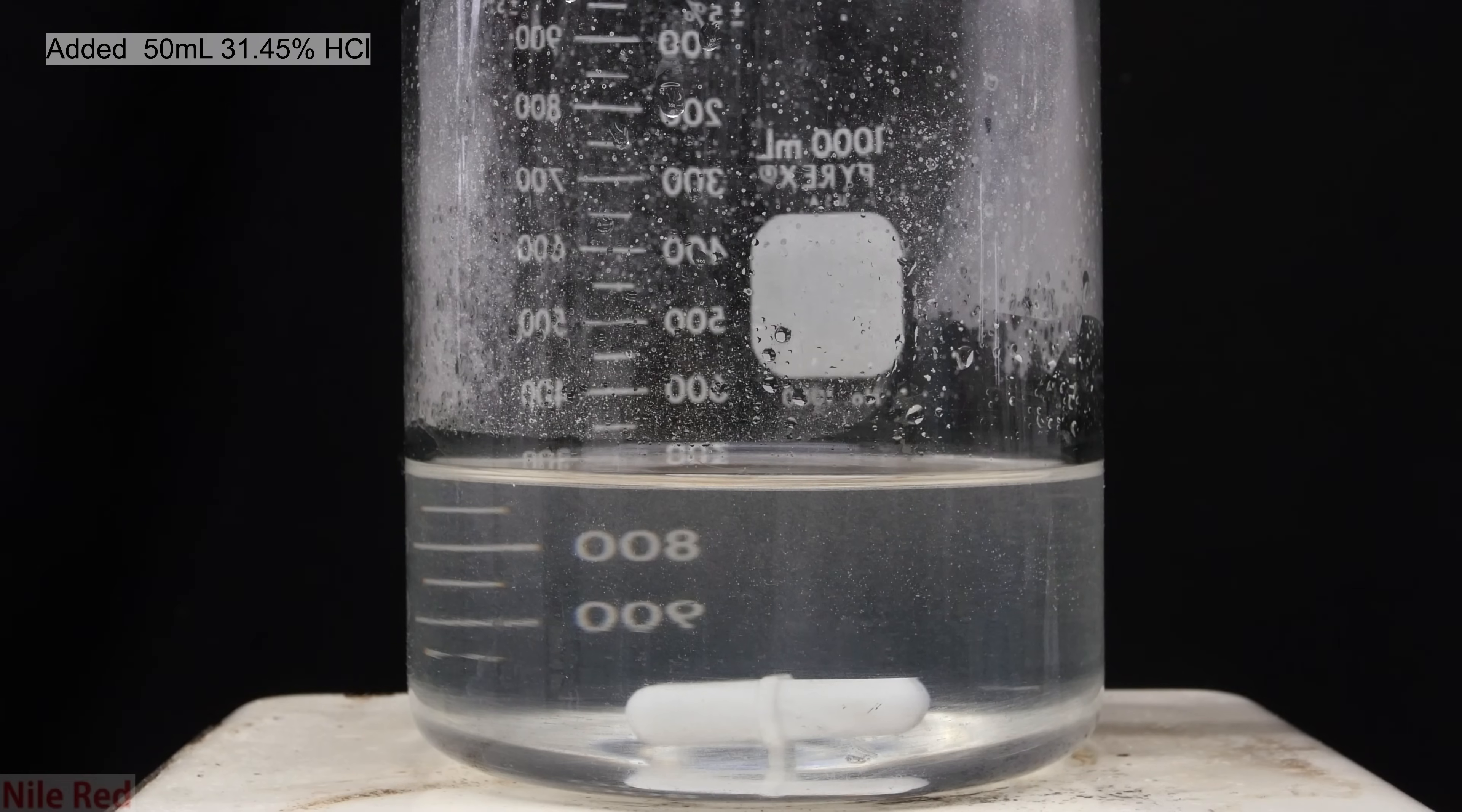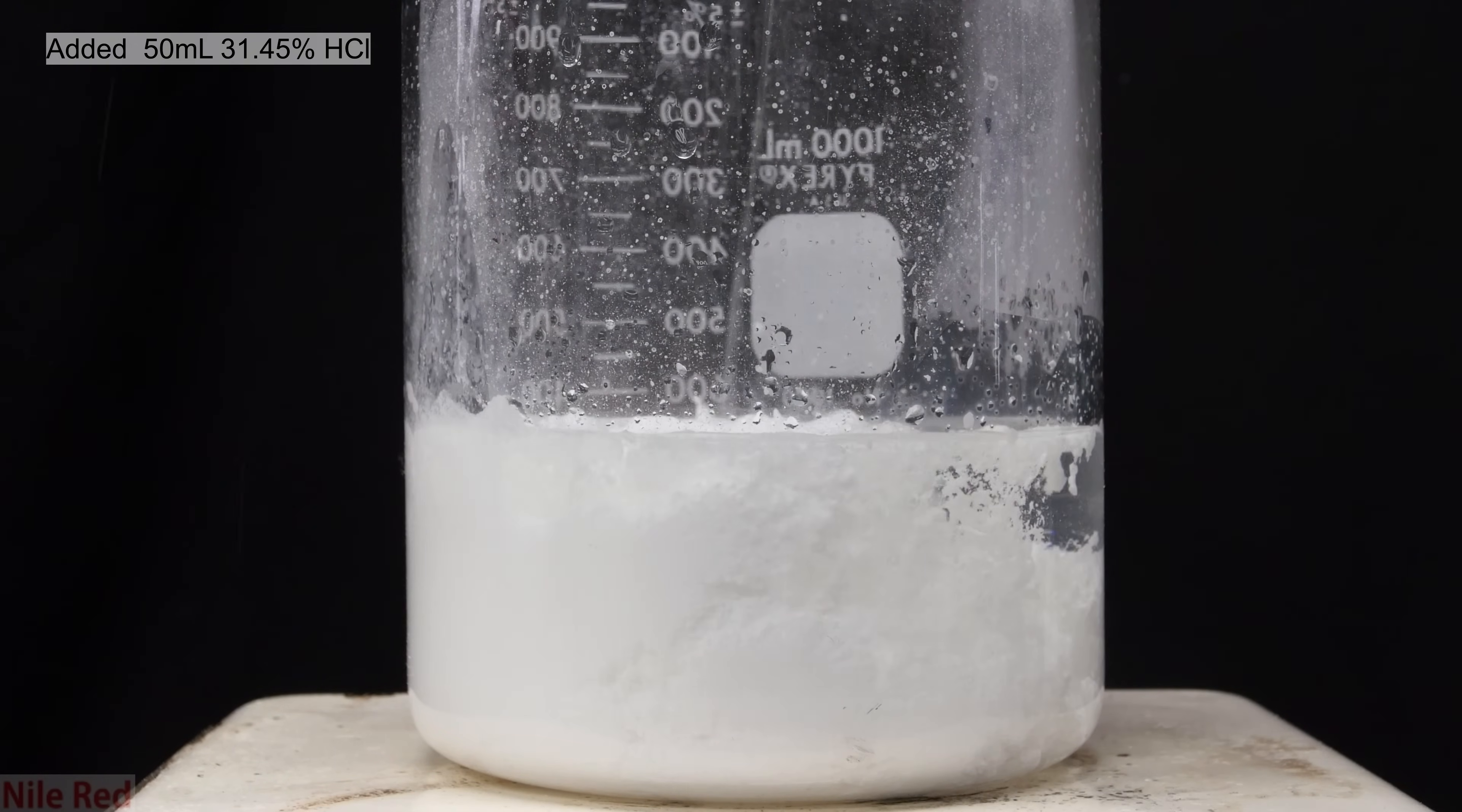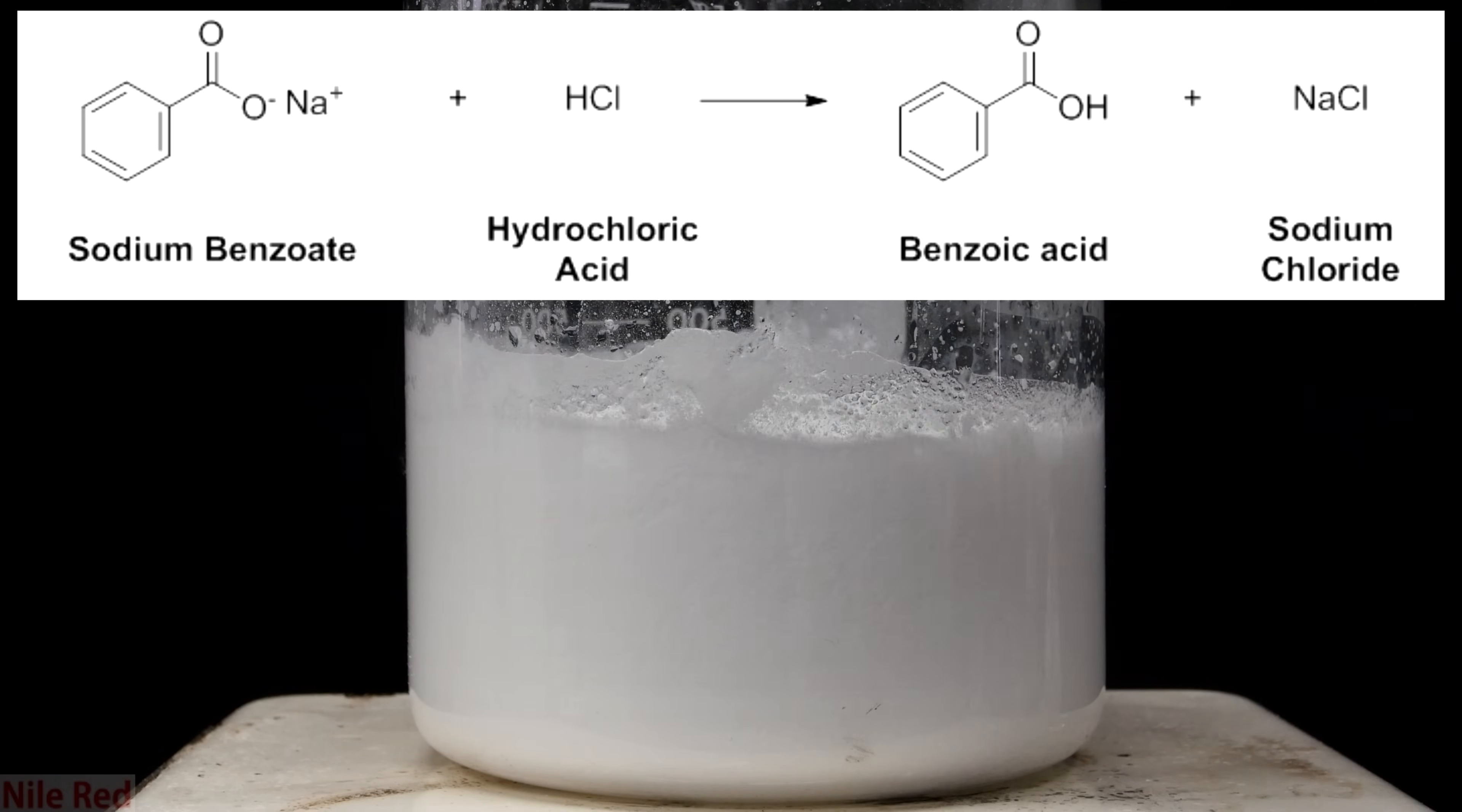I then added 50 milliliters of my 31.45% hydrochloric acid. The moment the hydrochloric acid hits the water, a white precipitate falls out. This white precipitate is our benzoic acid, which isn't very soluble in water. So what's happening here is the sodium benzoate is reacting with the hydrochloric acid to form benzoic acid and sodium chloride. The benzoic acid isn't very soluble in water, so it precipitates out, but the sodium chloride is very soluble, so it stays dissolved.